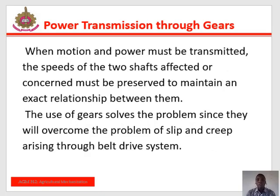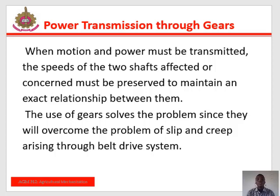Power transmission through gears. When motion and power must be transmitted, the speed of the two shafts concerned must be preserved to maintain an exact relationship between them. The use of gears solves this problem since gears overcome the problem of slip and creep arising through belt drive systems. Gears are therefore used to increase or decrease the speed and torque of shafts when power is being transmitted. Hence, in clear and simple terms, gears are used for changing shaft direction, for changing speeds, and for transmitting power.